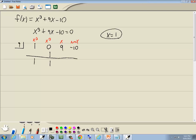Then we want to multiply. You always multiply by the number in the box by the number you just put down there. 1 times 1 is 1. Then we want to add. 9 plus 1 is 10. Then multiply. You always multiply by the number in the box by the number you put down there. 1 times 10 is 10. Then you add. Negative 10 plus 10 gives us 0.